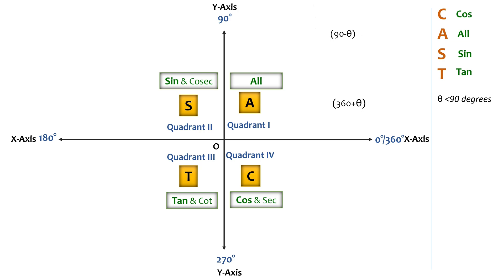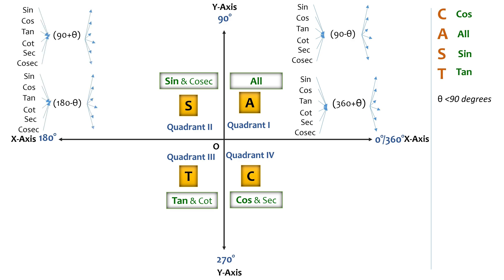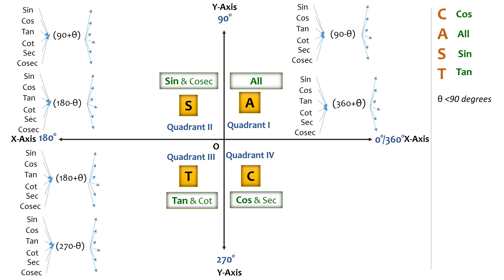We'll find the value of all trigonometric ratios for these angles. The angles 90+θ and 180−θ lie in the second quadrant, and we'll find all their trigonometric ratio values. The angles 180+θ and 270−θ lie in the third quadrant, and we'll find all their trigonometric ratio values as well.